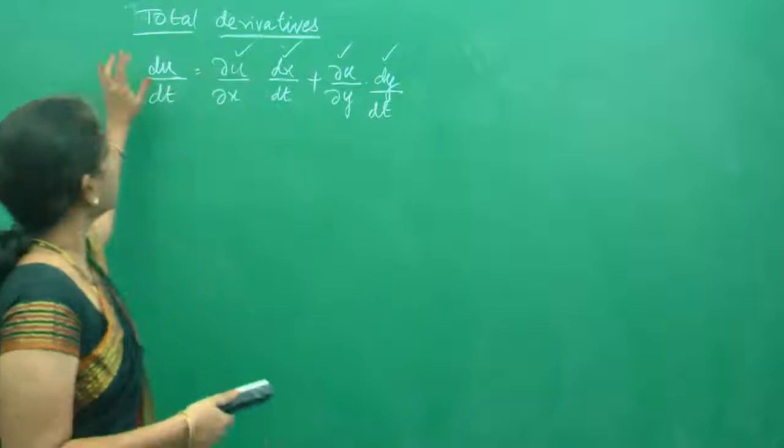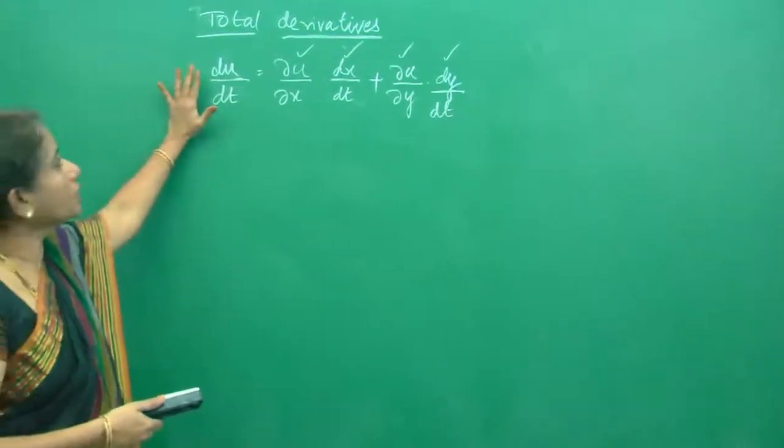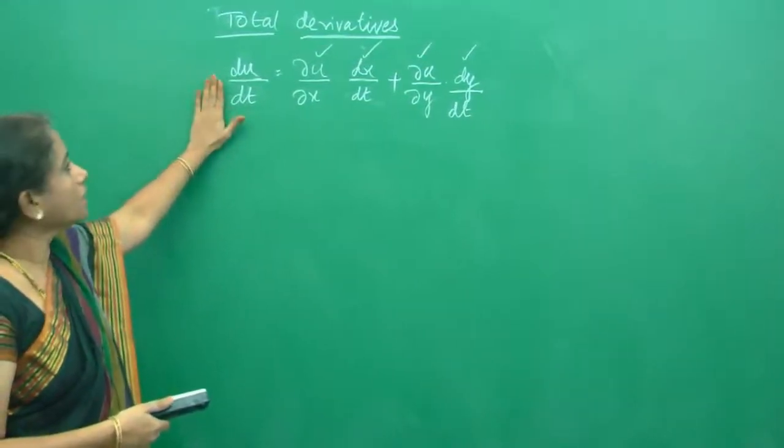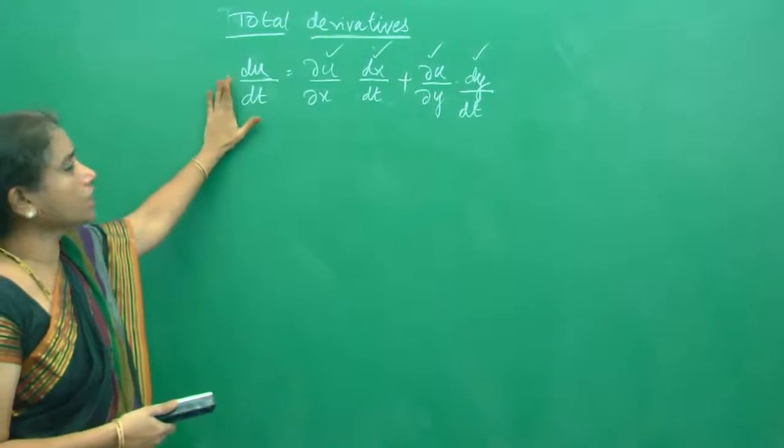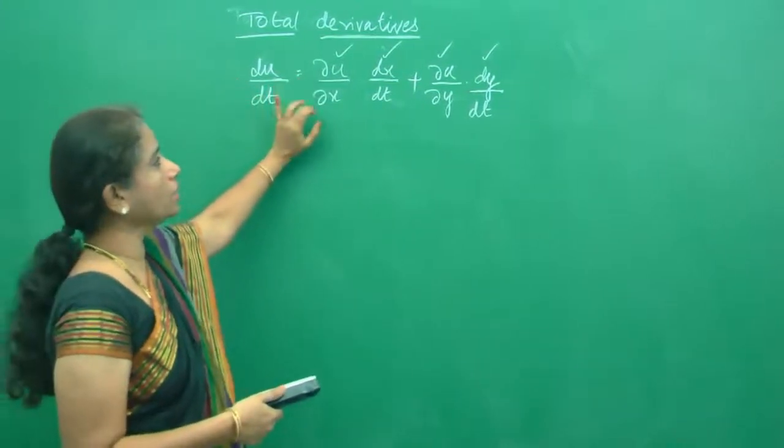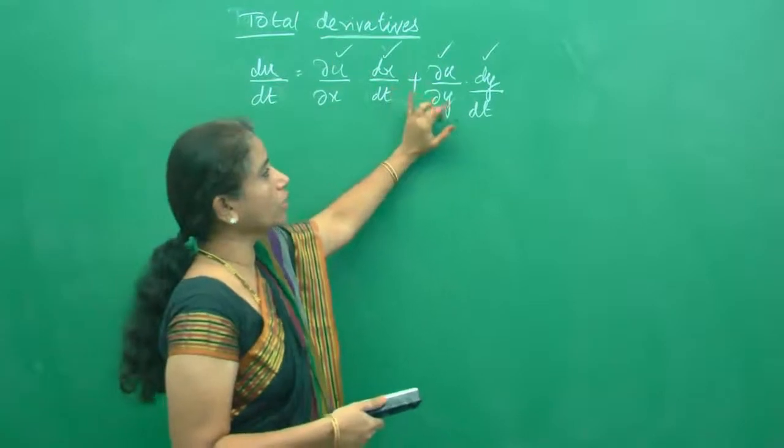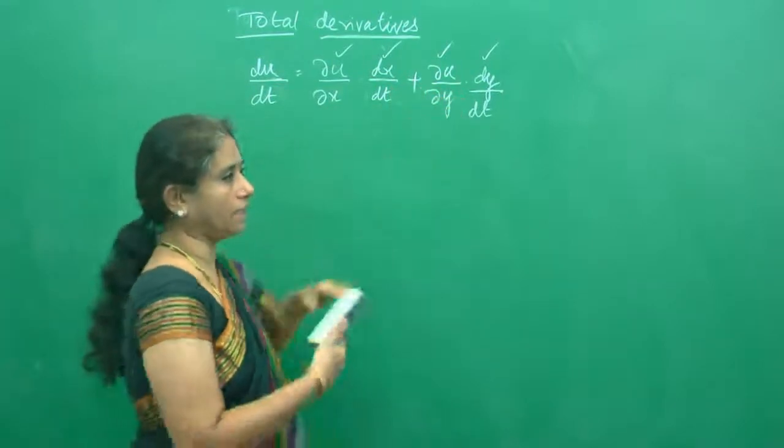Hello everybody. Today we are going to do one more problem in total derivatives. As you know, total derivative du by dt is given by ∂u/∂x into dx/dt plus ∂u/∂y into dy/dt.